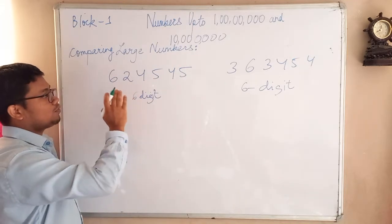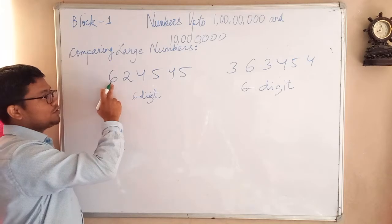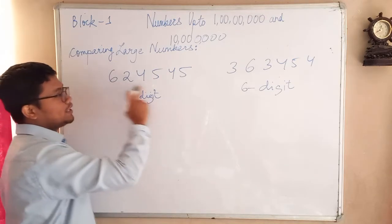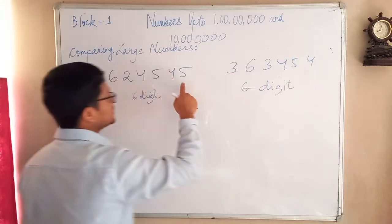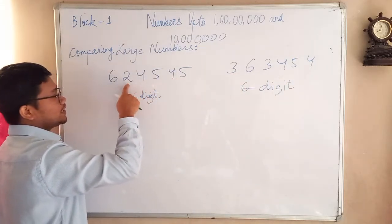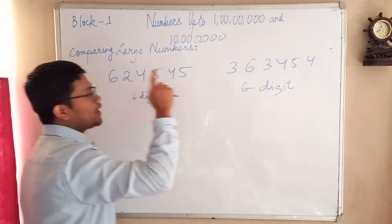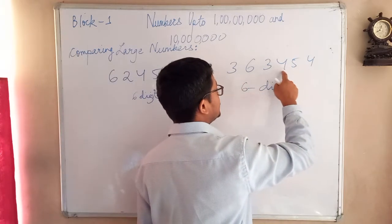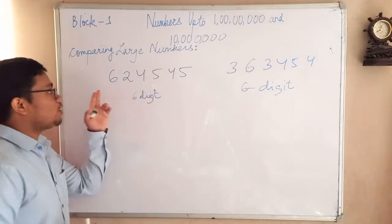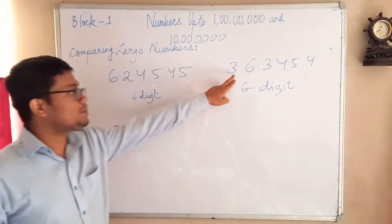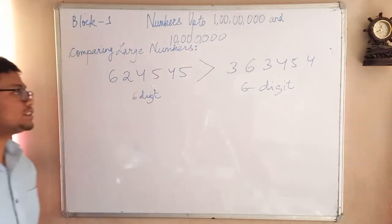After you check this, you have to look at the first digit. If you see, 6 is bigger than 3. If you count from the back: ones, tens, hundreds, thousands, ten thousands, lakh — so this is six lakhs and this is three lakhs. Obviously six lakh will be bigger than three lakh, so you have to give a sign like this.